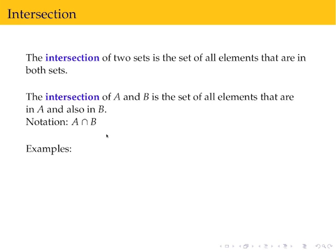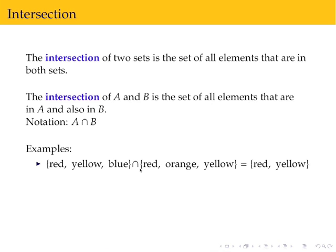Some examples of intersections. So the intersection of red, yellow, blue and red, orange, yellow, this is just like the previous example except we changed union to intersection. It's everything that overlaps, so you want the things that are in both sets, which are just the colors red and yellow.